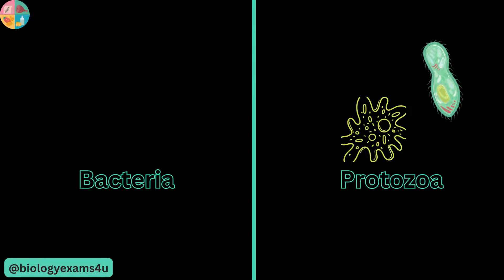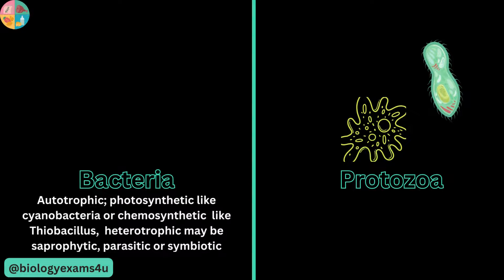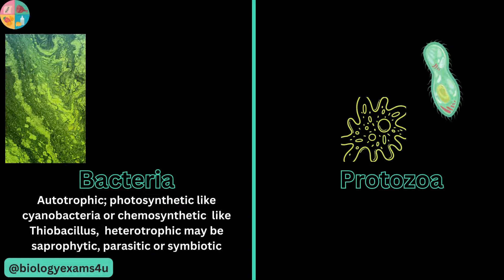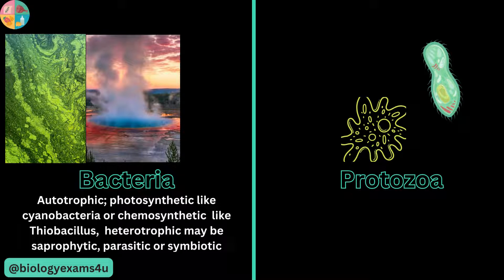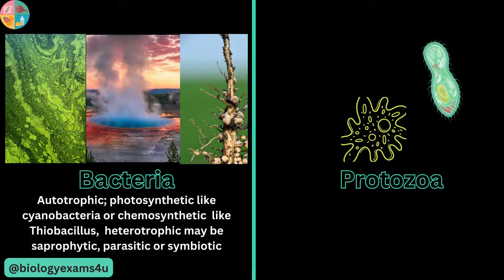Regarding mode of nutrition, bacteria can be autotrophic — either photosynthetic like cyanobacteria or chemosynthetic like Thiobacillus — or they may be heterotrophic, including saprophytic, parasitic, or symbiotic forms. For example, Rhizobium is symbiotic, living in the root nodules of legumes, and many are also parasitic in various organisms.